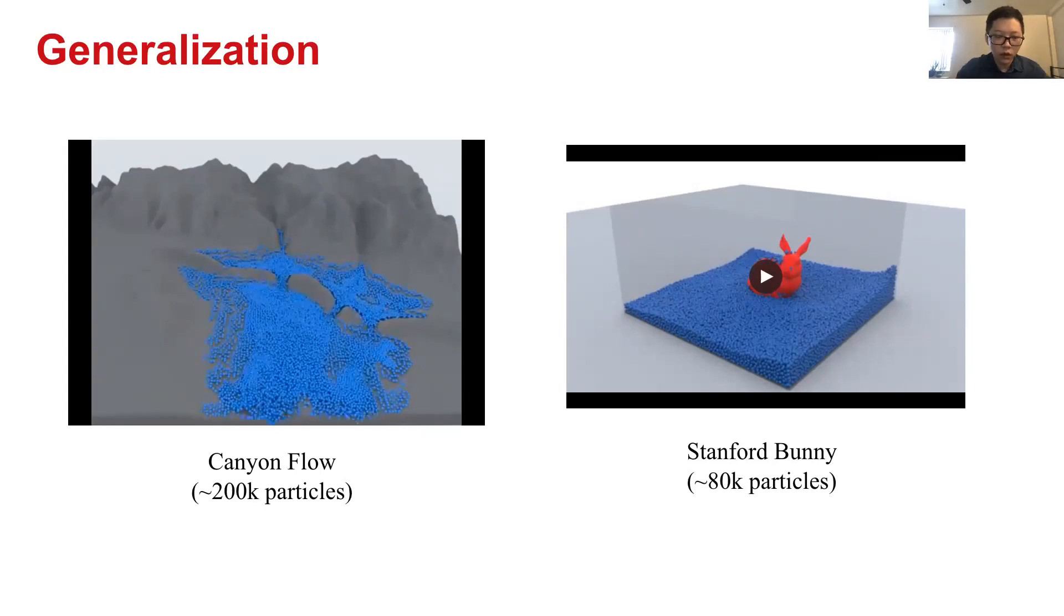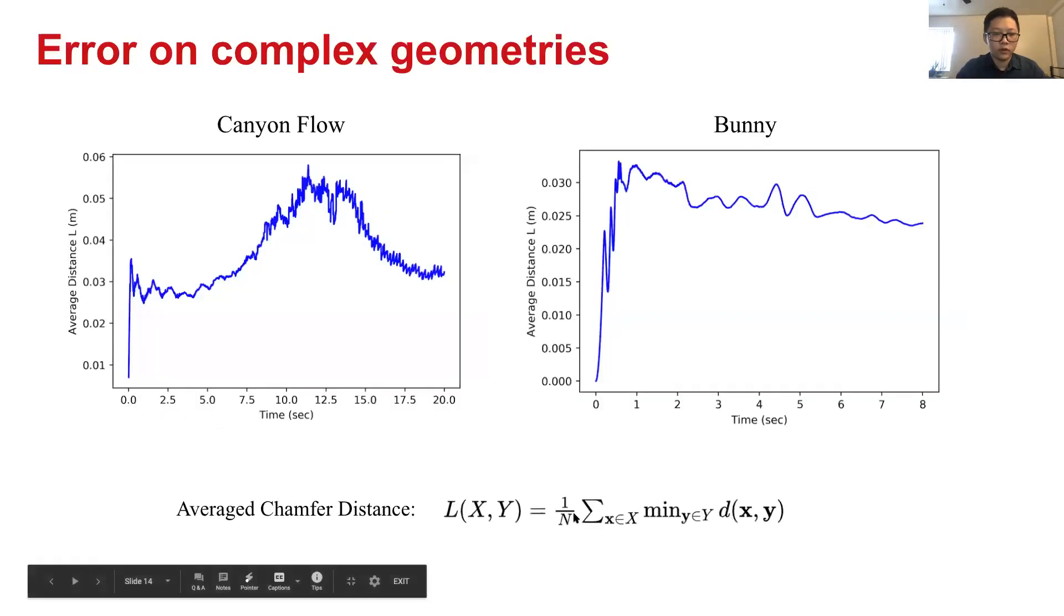And we also done some quantitative analysis by measuring the position error from our results to the ground truth data sequence. We use the chamfer distance to evaluate the position error of every point in a point cloud to another point cloud.